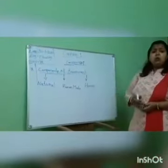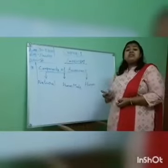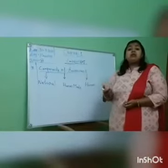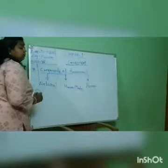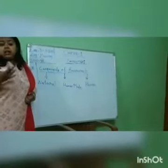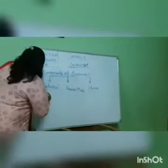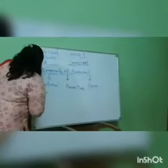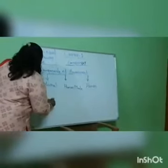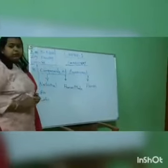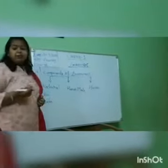The first component is natural. What do you understand by natural? Natural means nature — what do we get from nature? From nature we get air, which we breathe. The second thing we get is water, which we drink. The third one is land, where we are living.